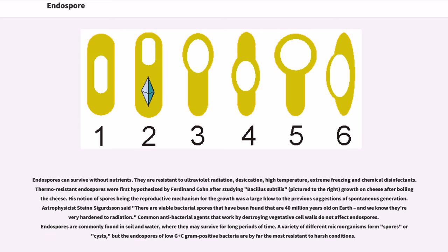Endospores can survive without nutrients. They are resistant to ultraviolet radiation, desiccation, high temperature, extreme freezing and chemical disinfectants. Thermo-resistant endospores were first hypothesized by Ferdinand Cohn after studying Bacillus subtilis growth on cheese after boiling cheese. His notion of spores being the reproductive mechanism for the growth was a large blow to the previous suggestions of spontaneous generation.